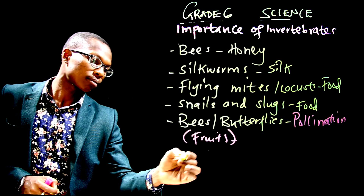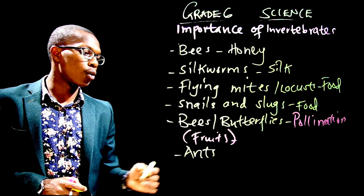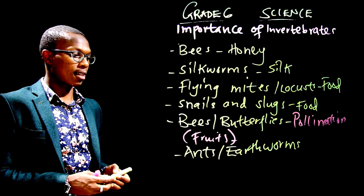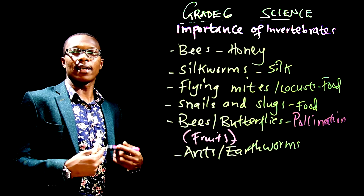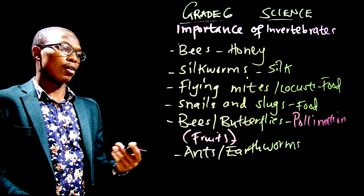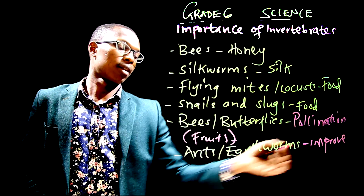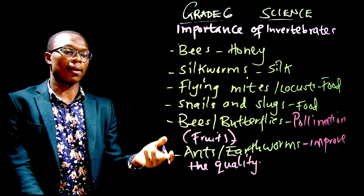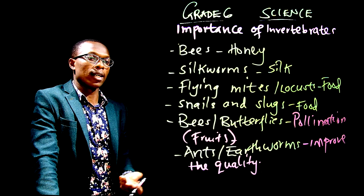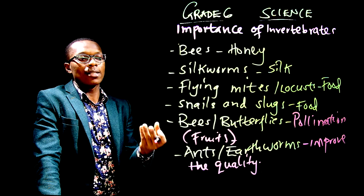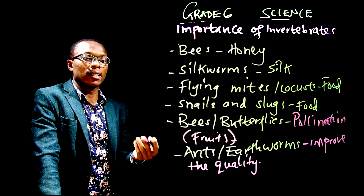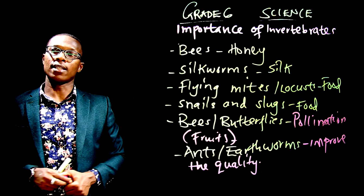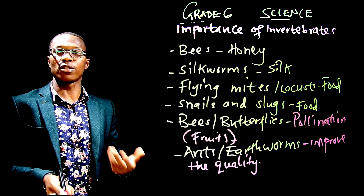Now let's look at the last one: ants and also earthworms. Now, what they normally do is that they aerate the soil — they improve the quality of soil. This helps the plants to grow, because it acts as a manure which helps the plants to grow. Once they decompose and die, they make the soil become fertile, and that's how plants grow easily and very fast, because the soil is now fertile.